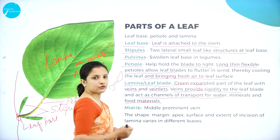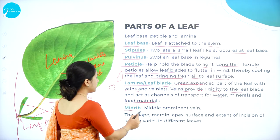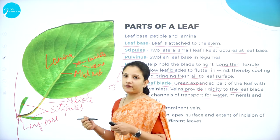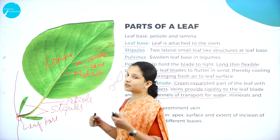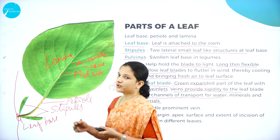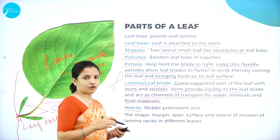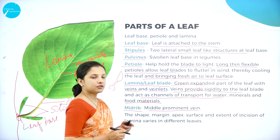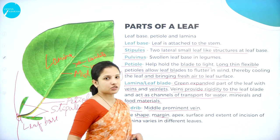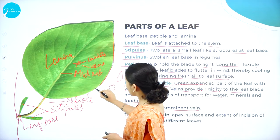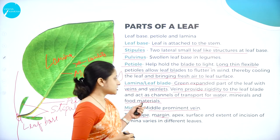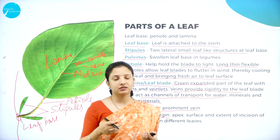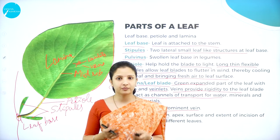The midrib is the middle prominent vein. It supports all the veins and veinlets and is the most prominent vein — it is like the main frame of the leaf. The shape of the leaf, the margin, and the arrangement of the veins all vary in different plant species, and based on these features, the classification of plants has been done.